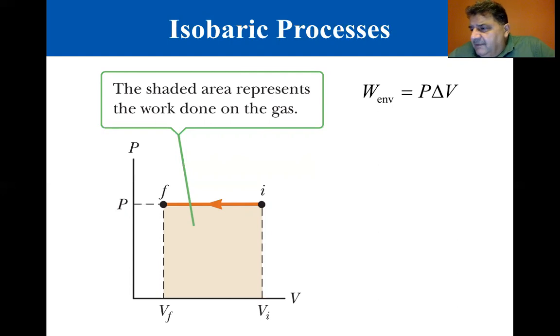The negative of this quantity, W equals minus P delta V, is the energy lost by the gas because the gas does work as it expands. This is the quantity that should be substituted into the first law.